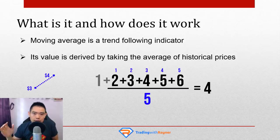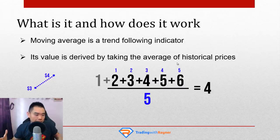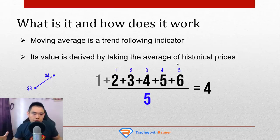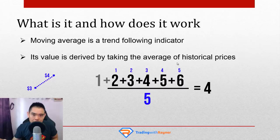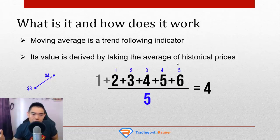A smaller value moving average will be more responsive to recent price movement, and a longer-term moving average will be less responsive. That's because if you have a small time period moving average — say a two-period moving average — you only look at the last two days of price. Each day the weightage of the price is 50% of the moving average value. Whereas if you look at the last 100-day price movement, each day's price is only about 1% of the weightage on the moving average value.